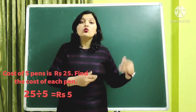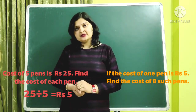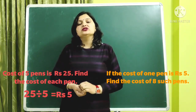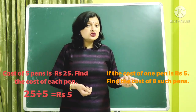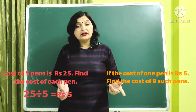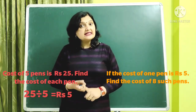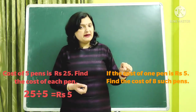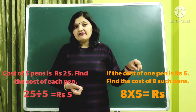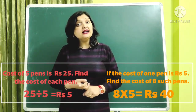Now let us discuss one more problem: if the cost of one pen is rupees five, find the cost of eight such pens. You have been given the cost of one pen, that is rupees five, and you have to find the cost of eight pens. Since eight pens is more than one pen, we multiply. Cost of eight pens is equal to eight multiplied by five, which is equal to rupees forty.